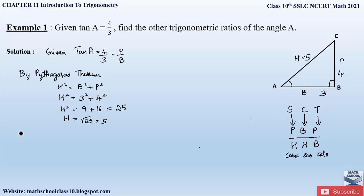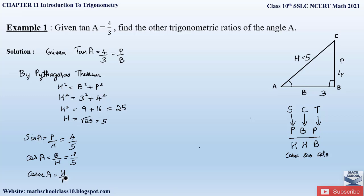Now let us find all the other trigonometric ratios. Sin A is perpendicular by hypotenuse, which is 4 by 5. Cos A is base by hypotenuse, which is 3 by 5. Cosecant A is hypotenuse by perpendicular, that is 5 by 4. Secant A is hypotenuse by base, that is 5 by 3. And cot A is base by perpendicular, that is 3 by 4.